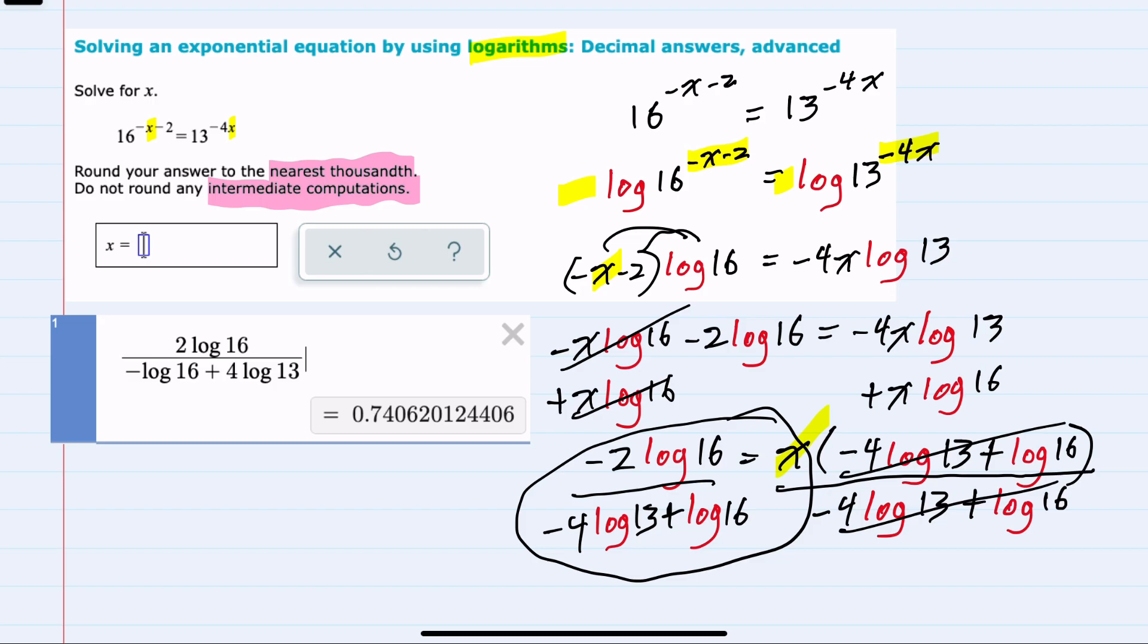Looking at the thousandths place, we have a 0 that's followed by a 6, so I will need to round up. Our solution for x will be 0.741 as our solution.